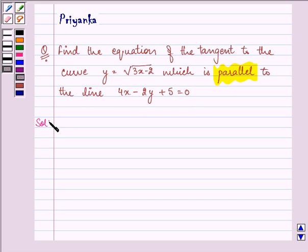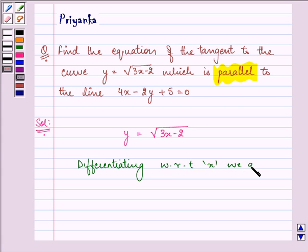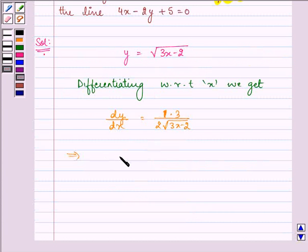Let us firstly find out the slope of the tangent. That will be by writing the equation of the curve which is given to us once again. Differentiating it with respect to x, we get dy by dx equals 1 multiplied by 3 upon 2 under root 3x minus 2. That implies dy by dx equals 3 by 2 under root 3x minus 2.